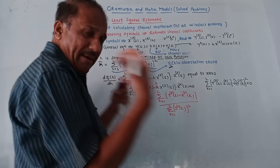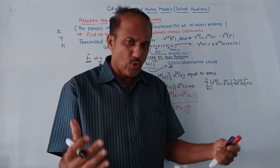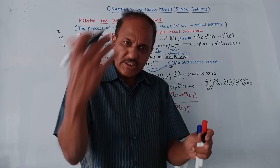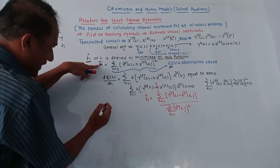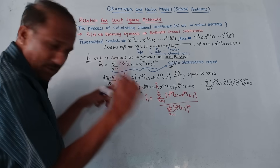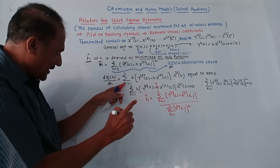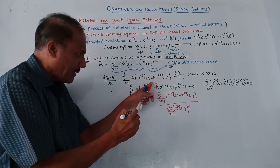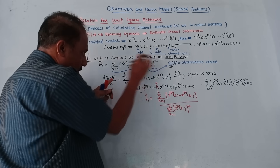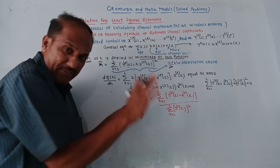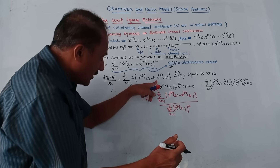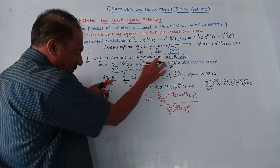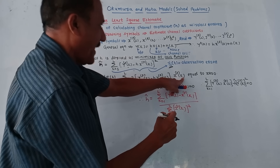We have to minimize the error — the observation error should ideally be 0. So we differentiate this equation with respect to h. The summation remains as it is, and the derivative of [yp(k) − h·xp(k)]² becomes 2 times [yp(k) − h·xp(k)] into xp(k).